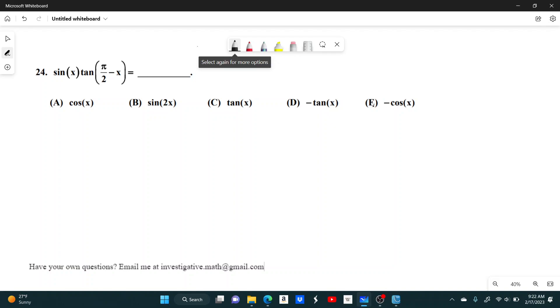So you're going to have to know some trig identities to solve this question. So sine of x, there's not much you can do with that. But if you look at this tangent of pi over 2 minus x, this is probably a lesser known trig identity, but you can still use one.